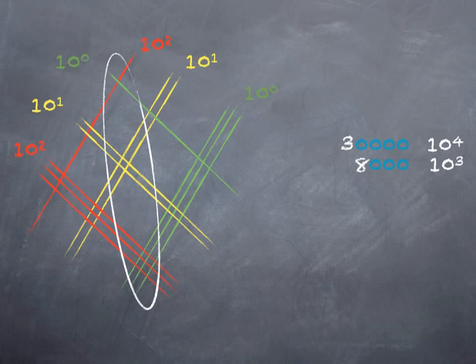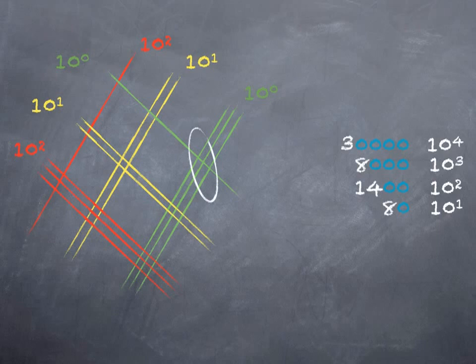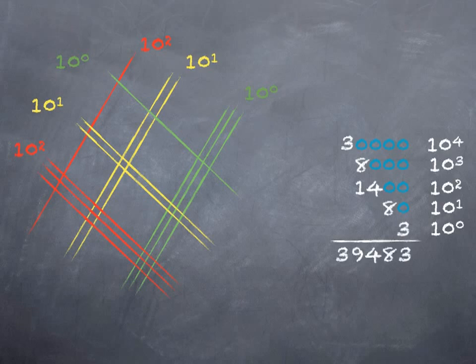If I bring the ones place into the mix, now I either have ten to the zero times ten-squared, which is ten-squared, or I have ten to the first times ten to the first, which is ten-squared. Either way, I get two trailing zeros in the hundreds place. So when I count up those fourteen intersections, that tells me I have fourteen groups of a hundred. Now I have yellow and green, which is my tens place and my ones place, which is going to leave me with one trailing zero, or ten to the first. There are eight of those, so I have eight tens, or eighty. And finally, my lonely ones intersecting ones. I'm going to have no trailing zeros, so those three that I get just go at the end. Now when I add them up, I get the same result as I did before, 39,483.